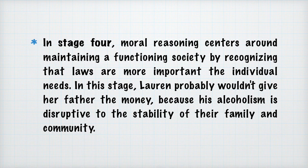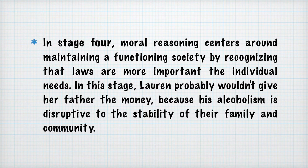In stage 4, moral reasoning centers around maintaining a functional society by recognizing that laws are important to individual needs. In this stage, Lauren probably wouldn't give her father the money because his alcoholism is disruptive to the stability of their family and community. In this stage, we try to explain how relationships in society and regulations and laws apply to each person.